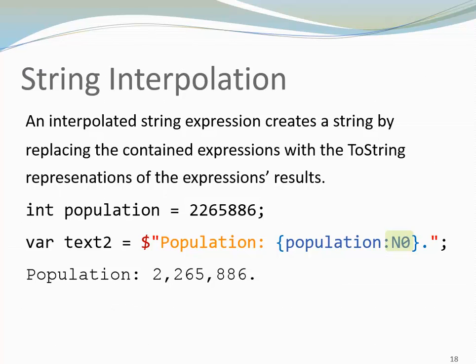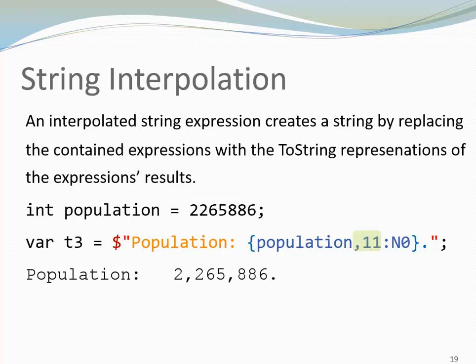We can do all kinds of formatting in connection with interpolated strings. We could for example add a specification for the column width. To do that, we use a comma and a number indicating how wide the column should be. Notice how two extra spaces were inserted. Now the population is displayed in a column that is 11 characters wide.